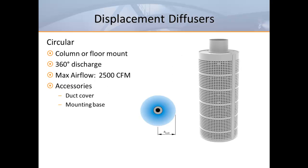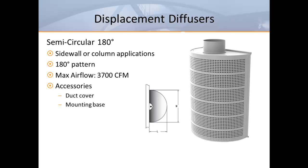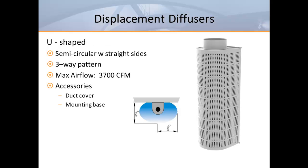One unit provides a 360-degree circular air pattern and is most often used to create air columns in large open spaces. A similar model provides a 180-degree air pattern, with many creative ways to integrate it into a column or the end of a wall. There's also another variation with deeper sides to create a three-way air pattern.